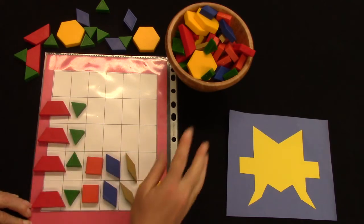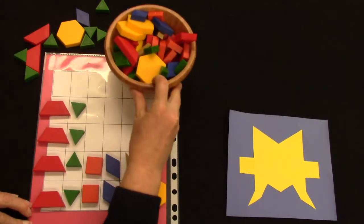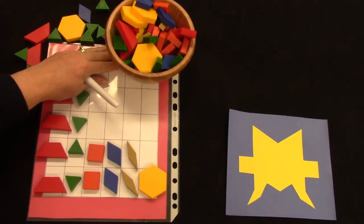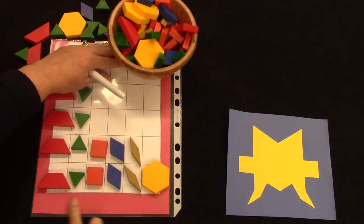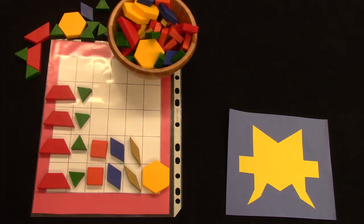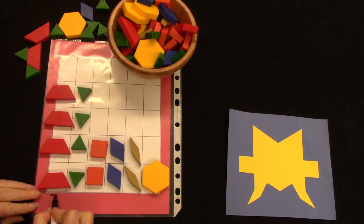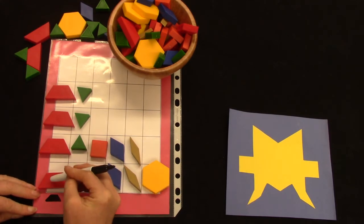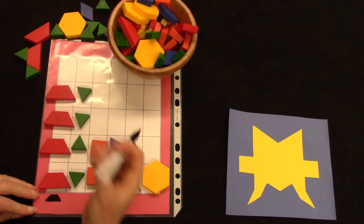So I have all of the shapes here on my graph and I'm gonna pull it up just a little bit so that I can write along here. Here are my trapezoids. I'm gonna draw a little trapezoid here. A trapezoid has four sides and four angles. How many trapezoids are on my chart? One, two, three, four.